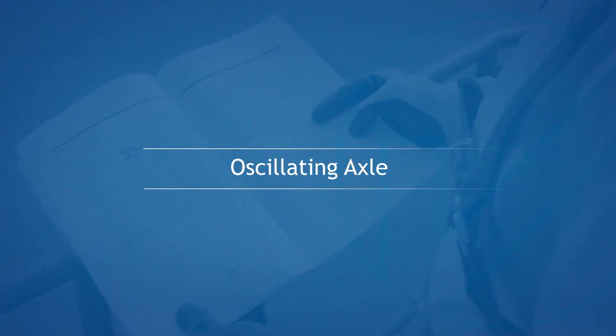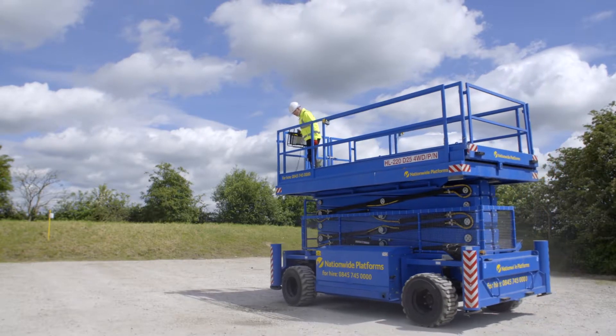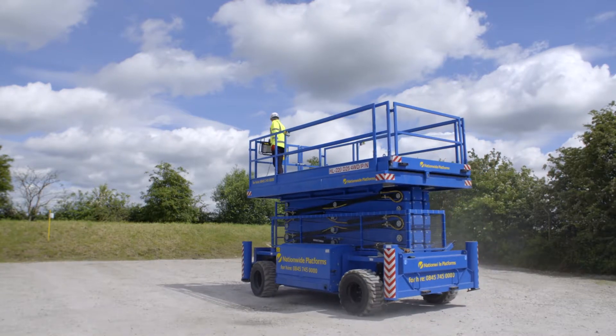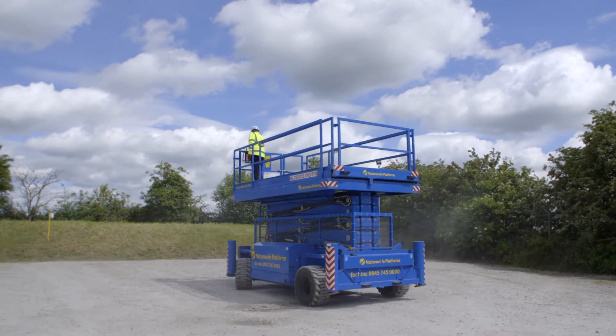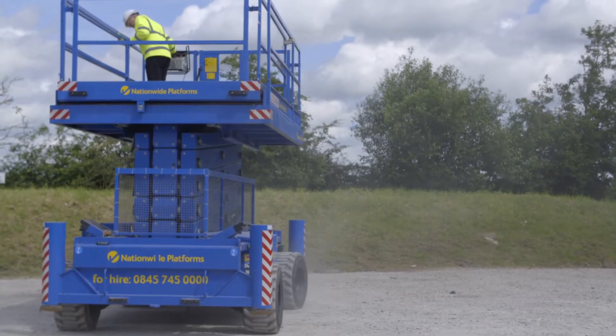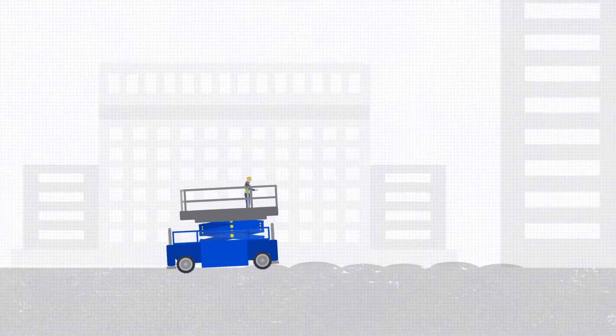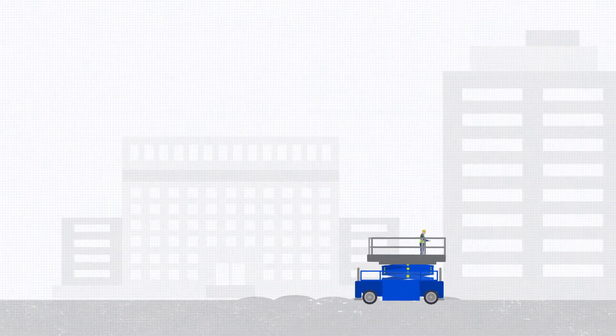Oscillating axle: The scissor lift has an oscillating axle. This makes it possible to drive on uneven ground when fully lowered while maintaining maximum traction. If the oscillating axle is in an unlevel position and the platform is at a height of more than 4 meters, all the driving functions will be automatically disabled.